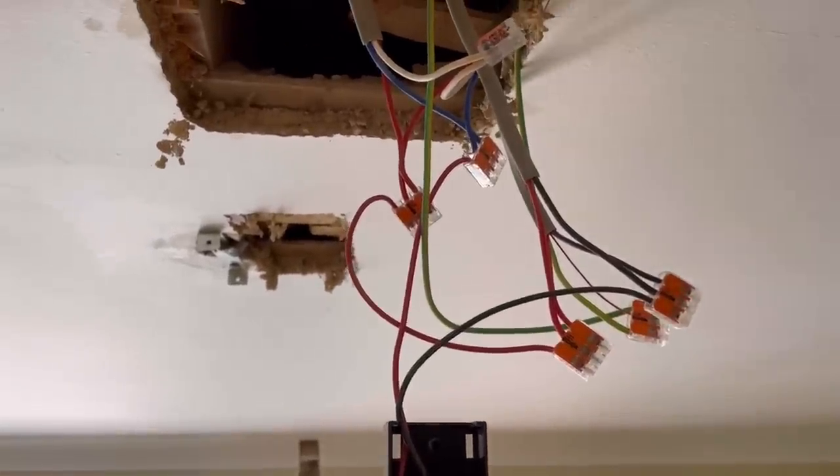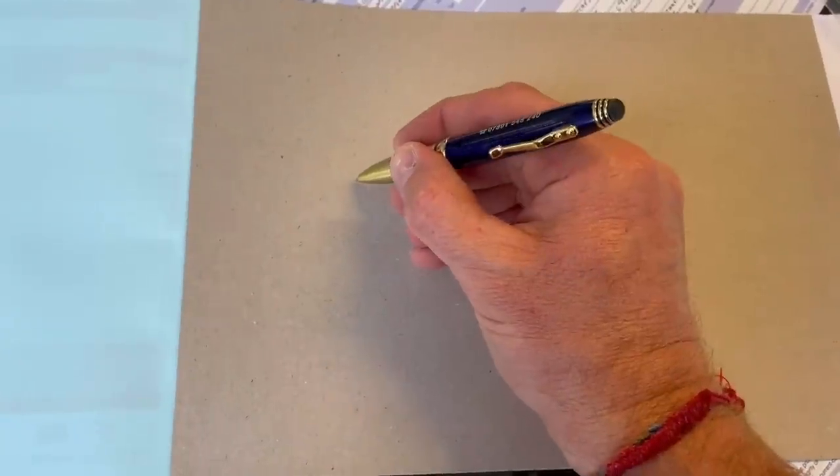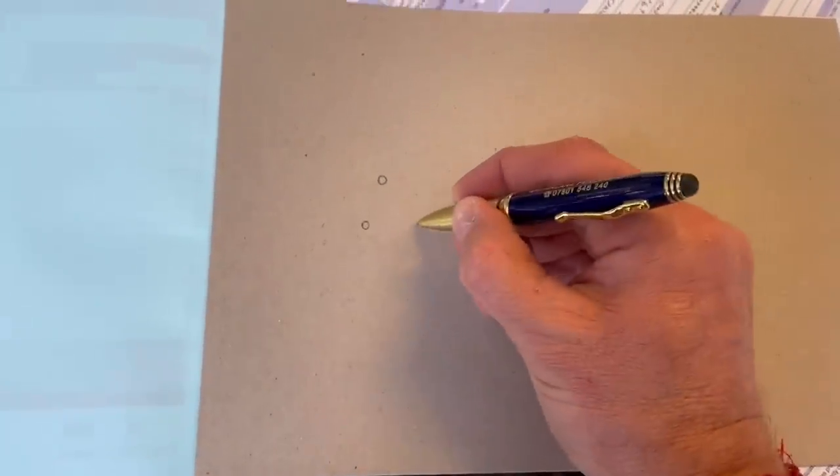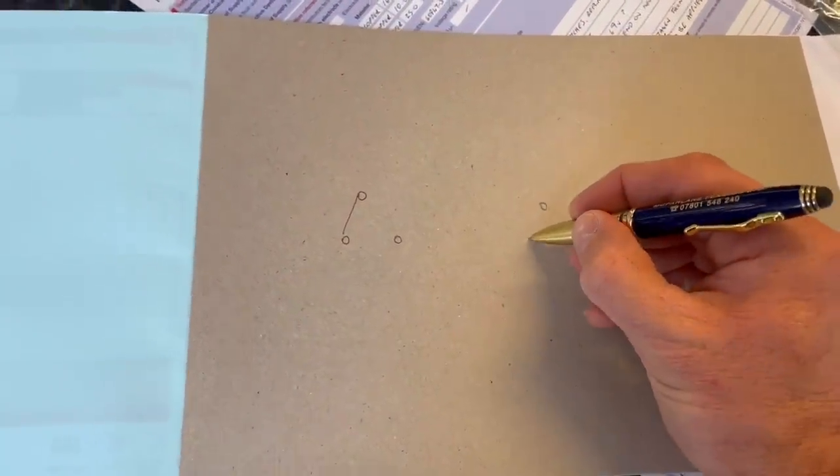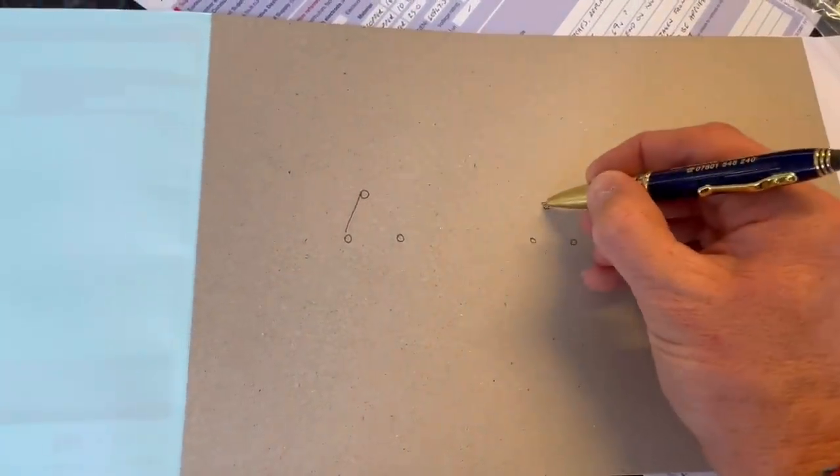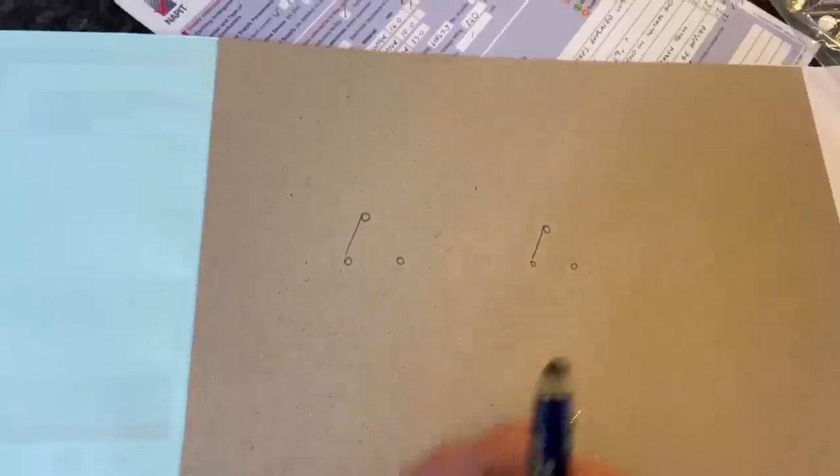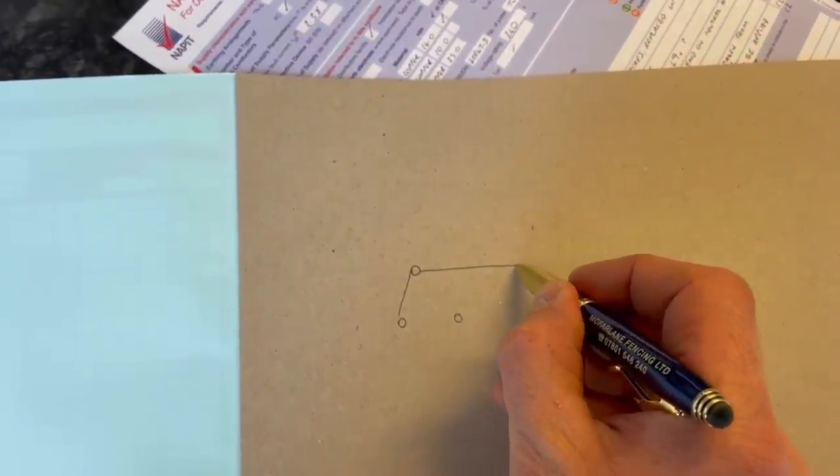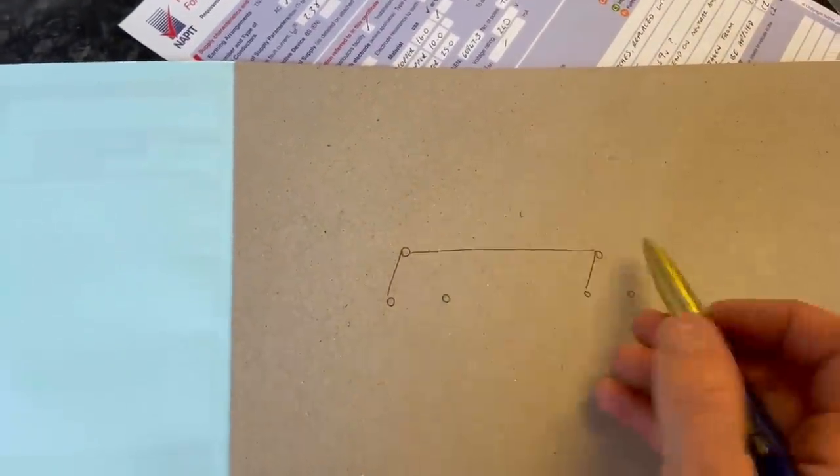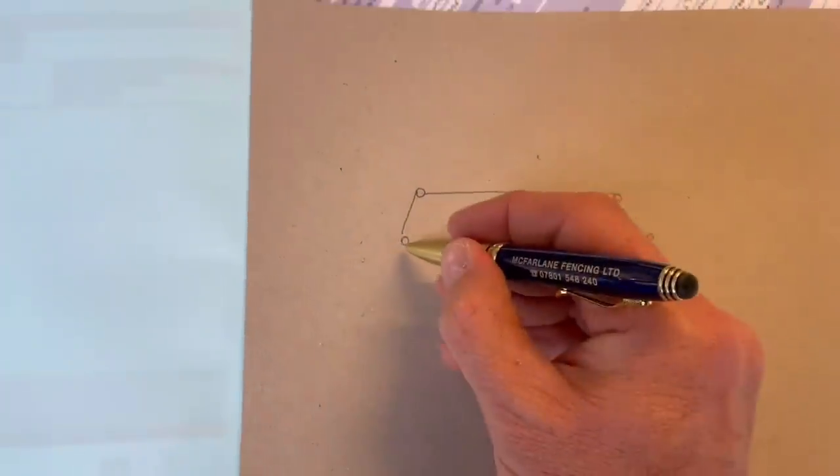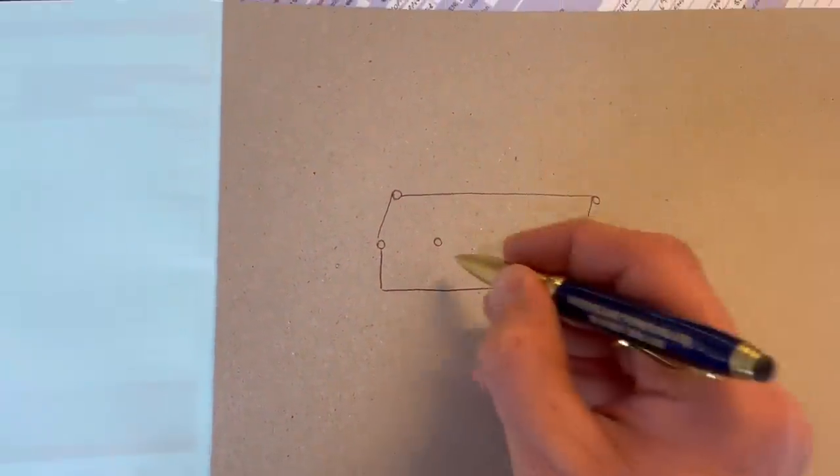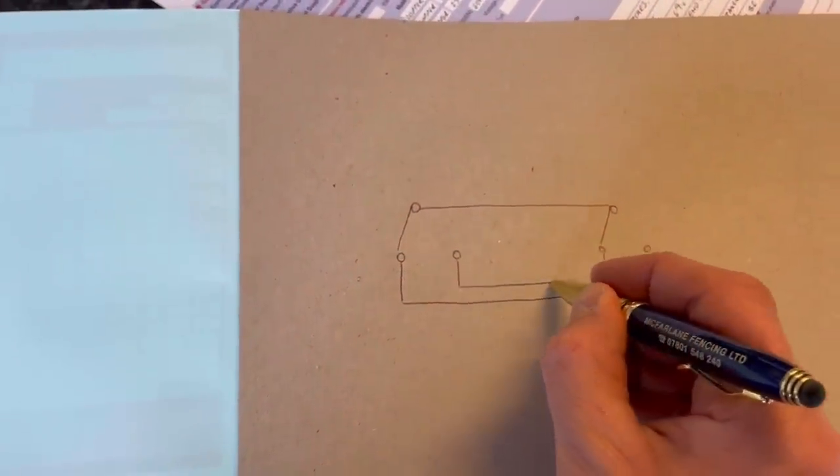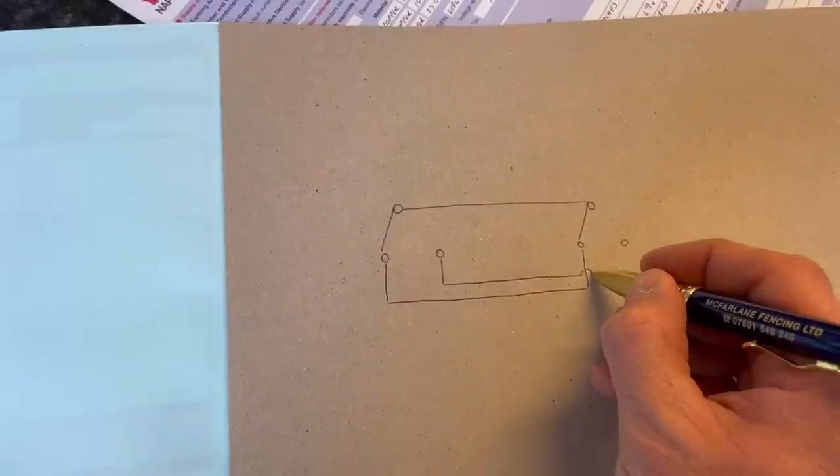I'll just draw it out for you. So let's say we've got one light switch here and one light switch here, just to represent the two-way lighting. All I've done is I've simply joined the two commons together, and again I've joined the two strappers together.